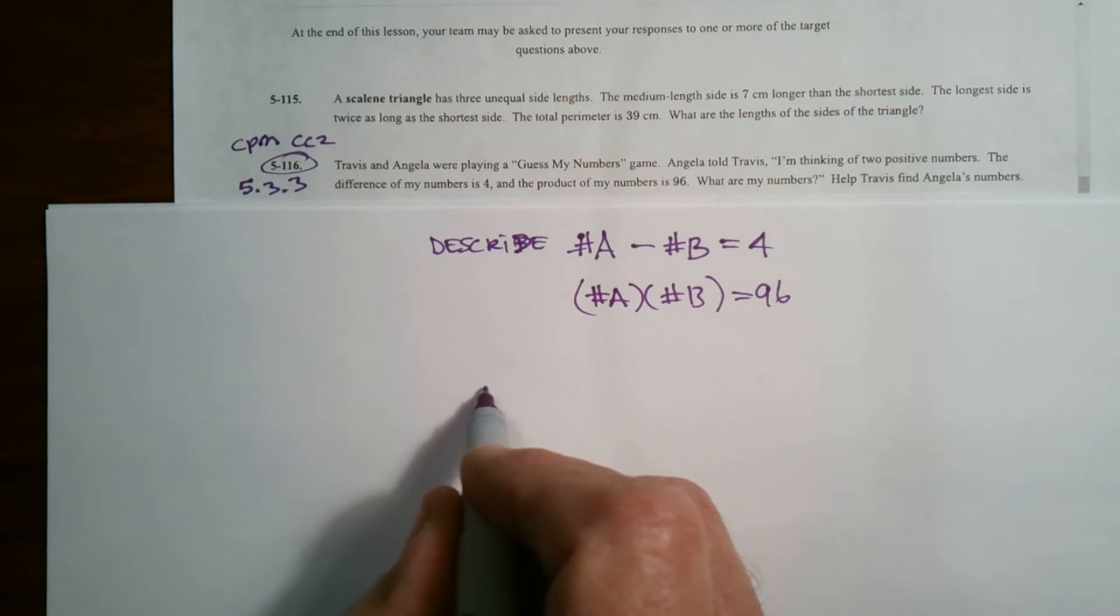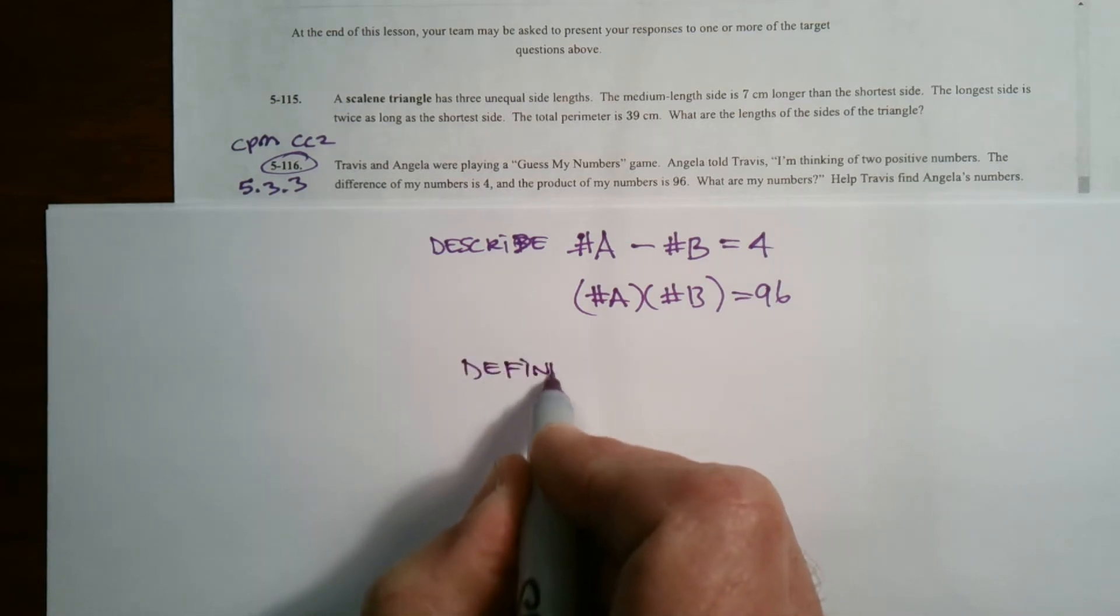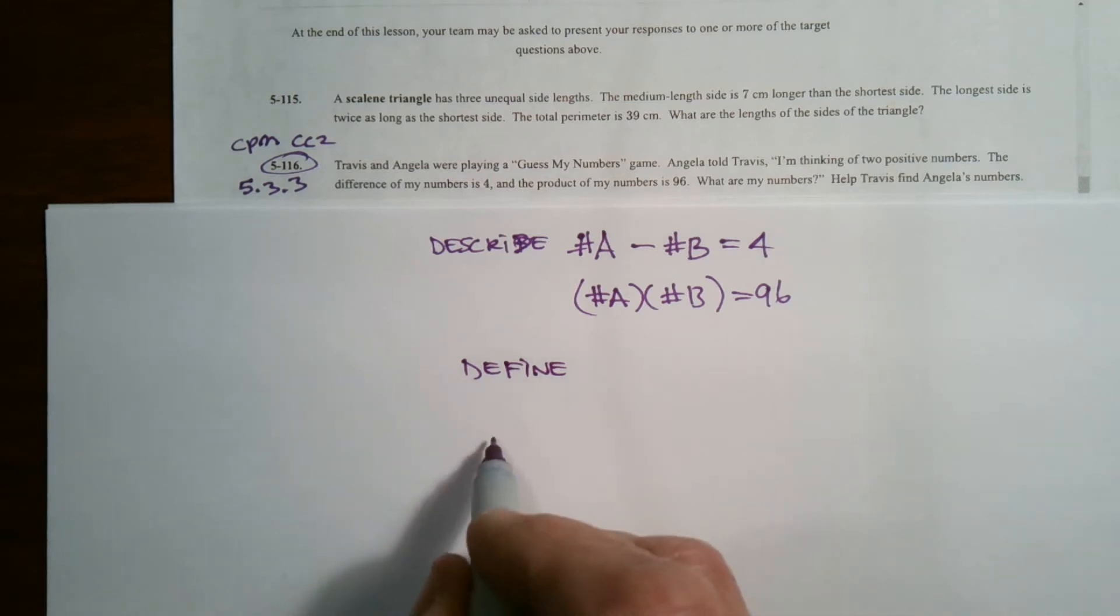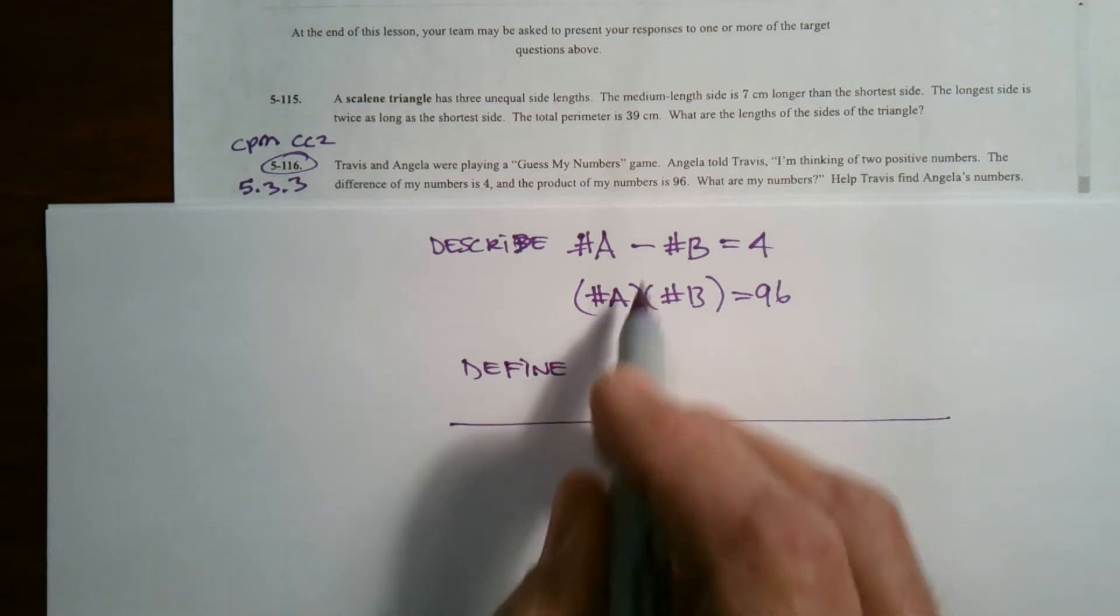So if I'm going to do my guess and check table, the next thing is the define. You have to figure out what are you, in your table, what are you going to be guessing on? What is that first thing?